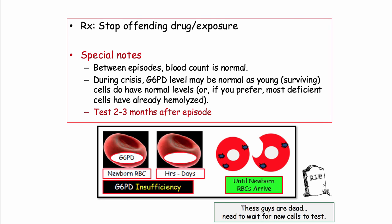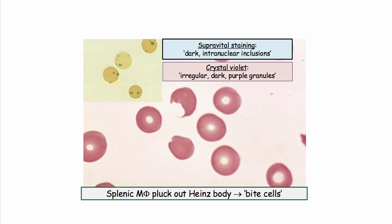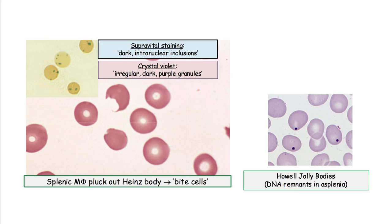Treatment is simply to stop the offending agent. Between episodes, the patient is asymptomatic and all is well. During an episode, G6PD levels may appear normal as most of the deficient cells have already been hemolyzed. The classic bite cell is normochromic and normocytic. Special stains are required to visualize Heinz bodies, as they are not seen on Wright stain. Compare this with Howell-Jolly bodies seen in asplenia — those are DNA remnants visible on Wright stain, a different finding in a different disease.